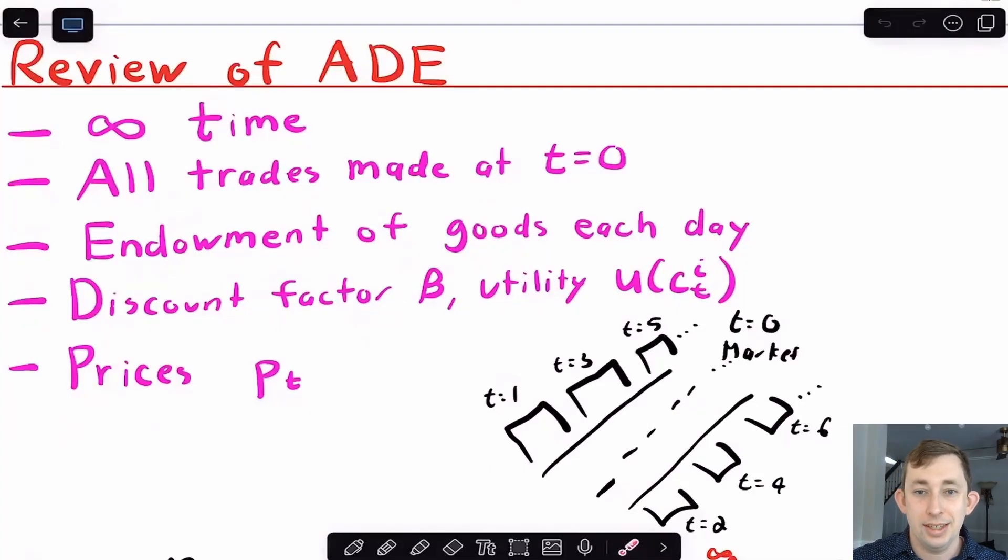But since you're here, let's just start off with a simple ADE asset price. To start off, maybe it's helpful just to review Arrow-Debreu equilibrium. Remember that we've got infinite time, all trades are made at time equals zero, and we just execute those trades throughout the time. We have an endowment of goods each day, we've got a time discount factor beta which is less than one, and we've got a utility function u of ct.